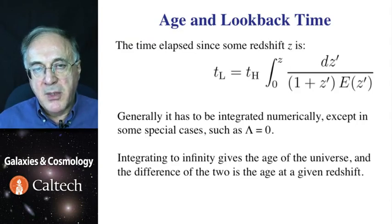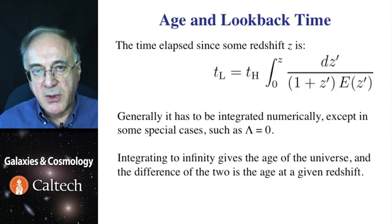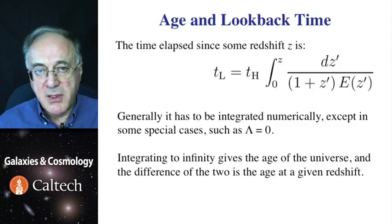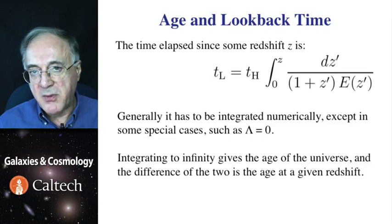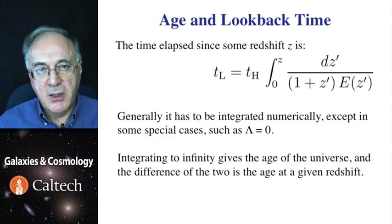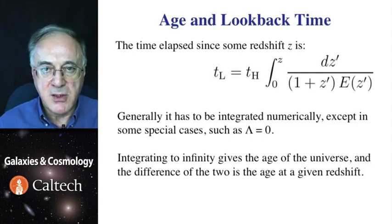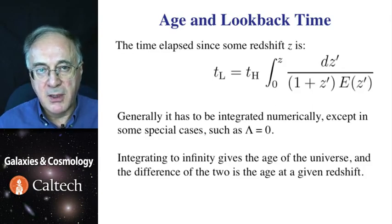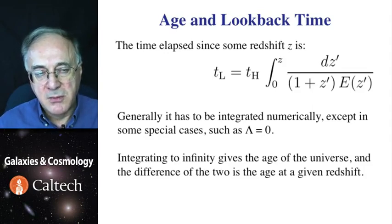So, that's the distances. What about the look-back time? Whereas we cannot directly measure it as a function of redshift, it is a useful quantity when considering things like galaxy evolution. The time elapsed since some redshift of z, which is the look-back time, is given by the same formula as we've seen before, except corrected by 1 plus z. So, then again, this also has to be evaluated numerically, except for some special cases, like with zero cosmological constant, when analytical solution does exist. If we're to integrate this all the way out to infinite redshift, that is, to the Big Bang, we will get the total age of the universe.